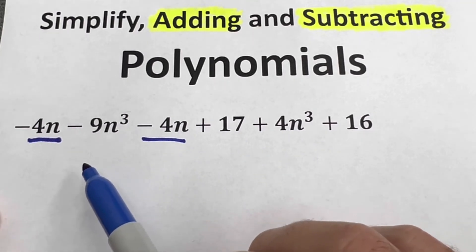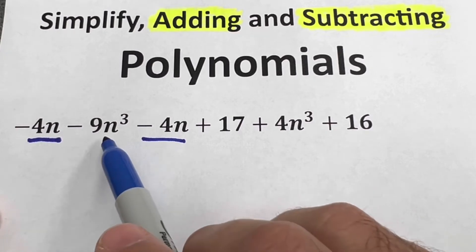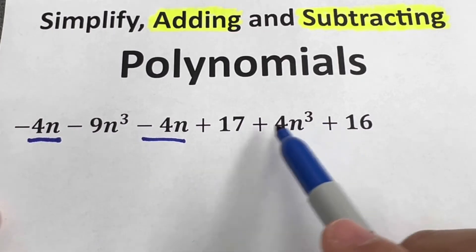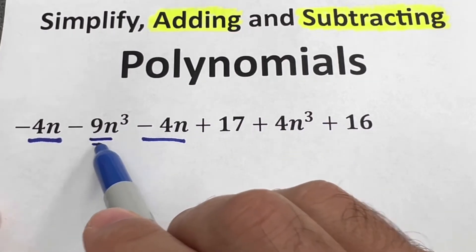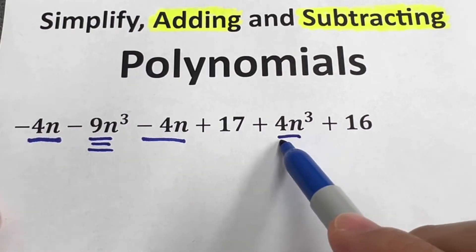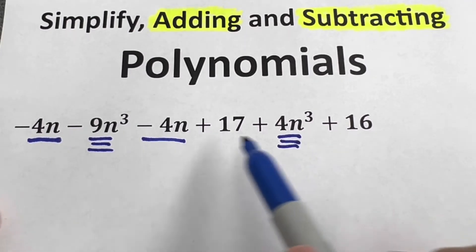Like terms is when they have the same variables with the same exponent. Now n³ and n³, those are like terms. What I'll do is underline them differently so I can easily see and differentiate one from another.